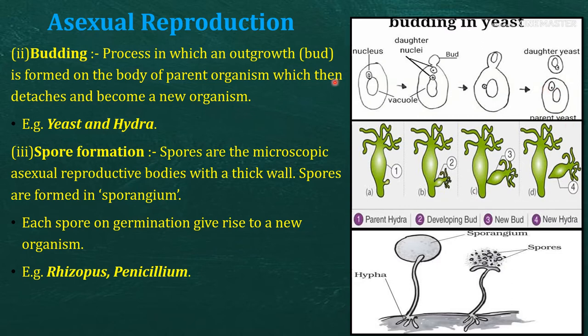The budding example includes yeast and hydra. In hydra, a small bud forms on the parent organism. After some time it grows into a developing bud, then a new bud is formed. When it is fully fit to survive and exist alone, it detaches itself from the parent organism and a new hydra is formed.